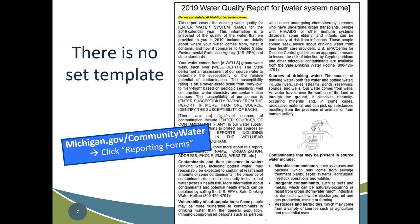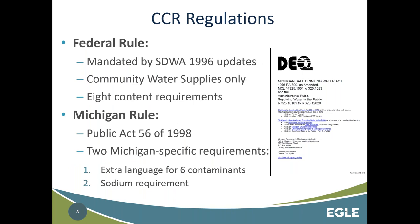The CCR is required federally under the Safe Drinking Water Act 1996 updates. It is for community water supplies only and does not apply to non-community systems. There are eight content requirements, varying from what's required in the data table to required language. The Michigan rule has two extra requirements: extra language for six different contaminants if you have levels above an action level or MCL, and the sodium requirement — which is not a federal requirement — meaning sodium must appear on every report even if it was non-detect in your last sample result.